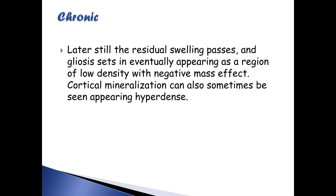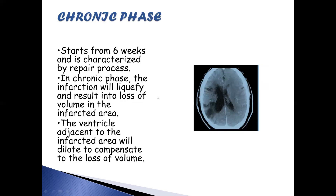In the chronic phase, beginning around six weeks, residual swelling resolves, gliosis sets in, and the area eventually appears as a region of low density with negative mass effect. Cortical mineralization can sometimes appear hyperdense. The infarction starts liquefying, resulting in loss of volume in the infarcted area. The adjacent ventricle dilates to compensate for that volume loss — this ipsilateral ventricular dilation is the key finding to diagnose chronic ischemia.